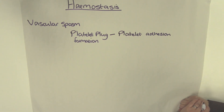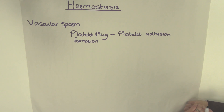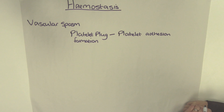Platelet adhesion causes the platelets to become activated and their characteristics change dramatically. They extend many projections on their surface which enable them to make contact with other platelets, and they start to release their contents into the local area. In particular, they release thromboxane A2, which activates other nearby platelets and causes further vasoconstriction. They also release ADP (adenosine diphosphate), which makes the platelets sticky. This is known as the platelet release reaction.